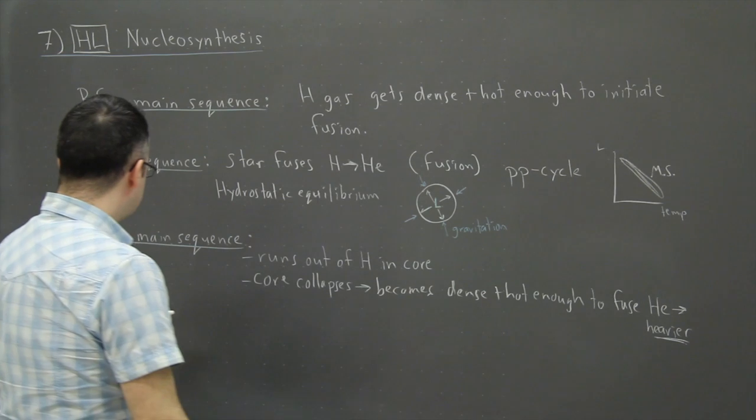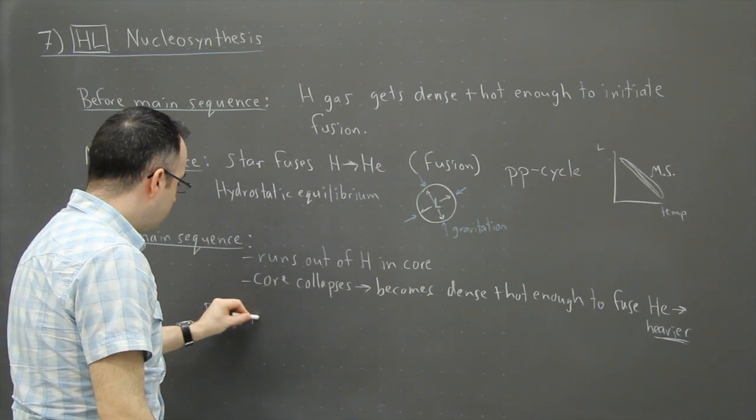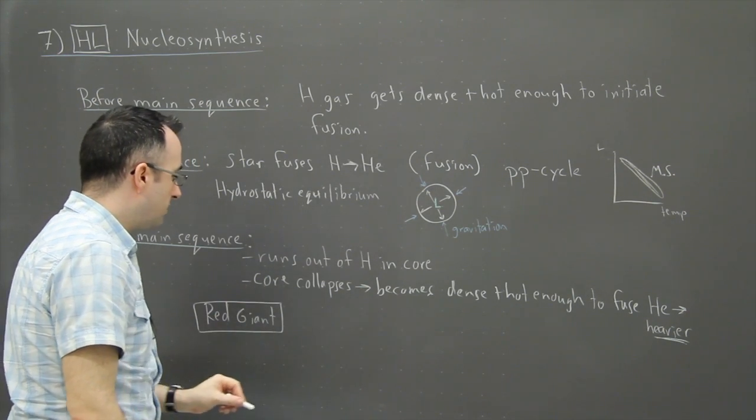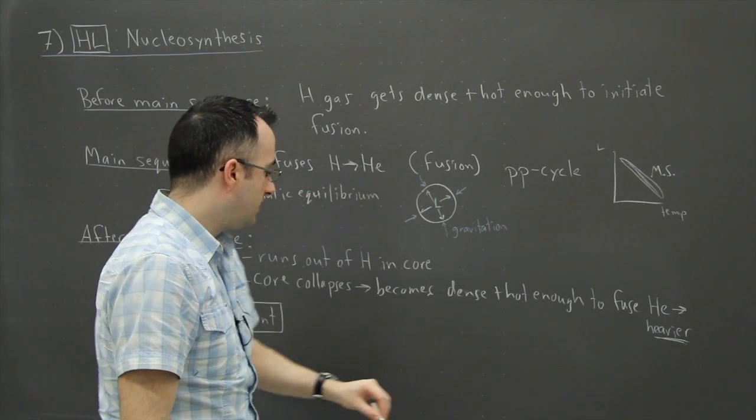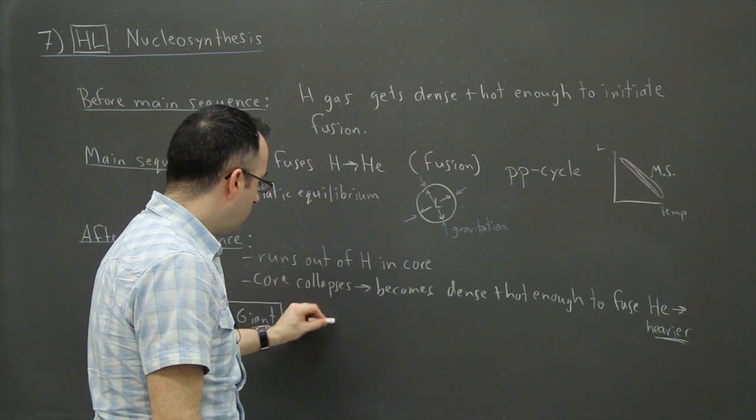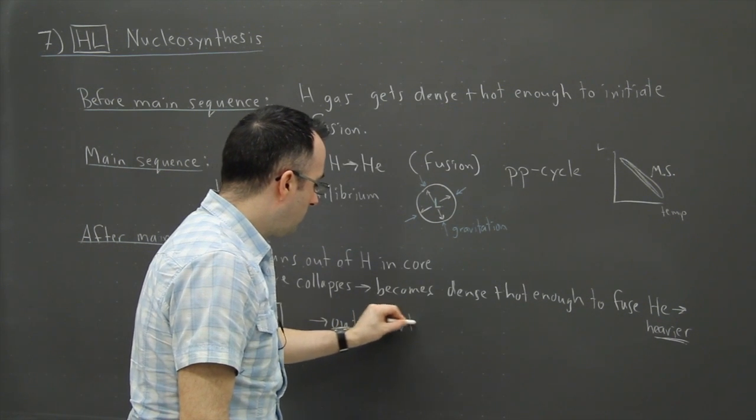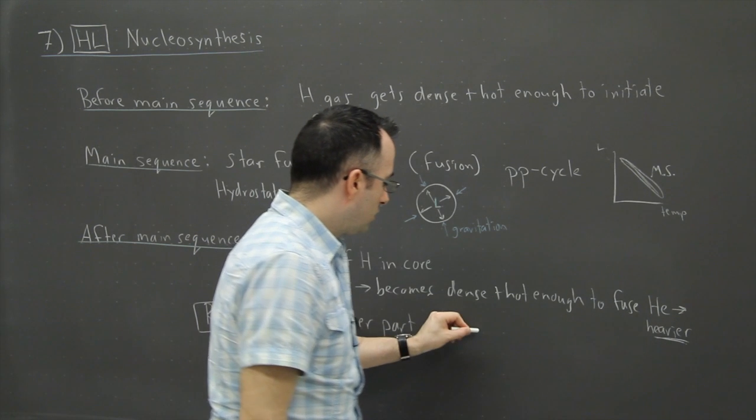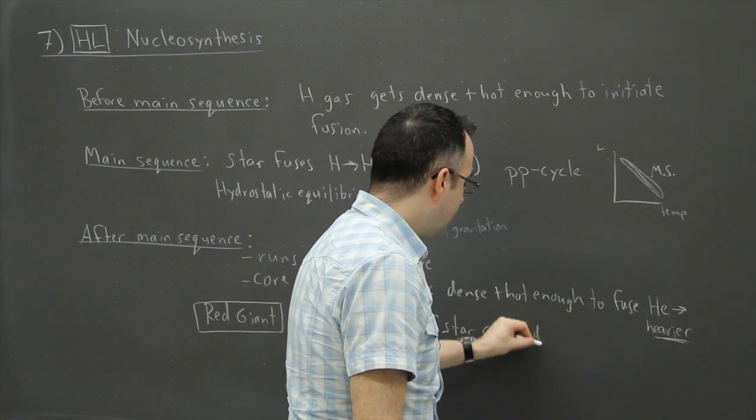Now, of course, when it does this, then it becomes a red giant at this point. Because what's really weird, this is a weird process here. When the core collapses and becomes dense and hot enough to fuse helium, the outer part of the star cools and expands.